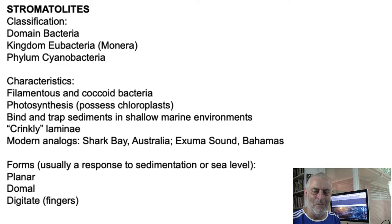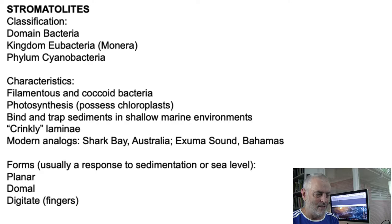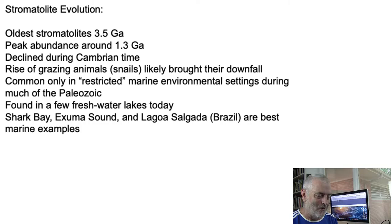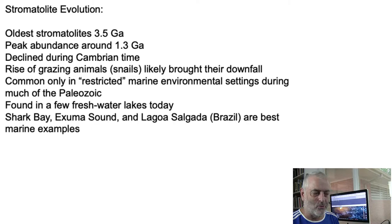There are also laterally linked hemispherites and many other shapes. Living stromatolites exist today in the Bahamas, South Texas, and the Persian Gulf. The oldest known stromatolites are about 3.5 billion years old — remarkable given that the moon formed around 4 billion years ago from a Mars-sized impactor. Stromatolites hit their peak abundance about 1.3 billion years ago, then declined during Cambrian time when snails brought their downfall, though they've survived in extreme environments ever since.